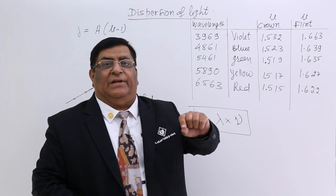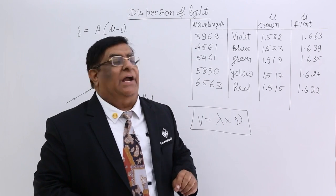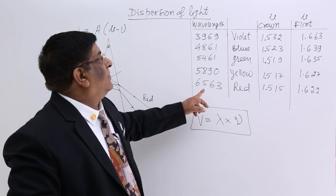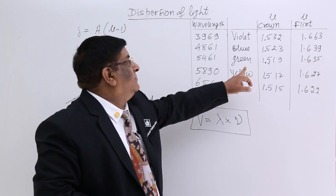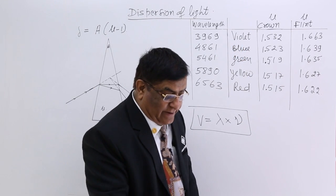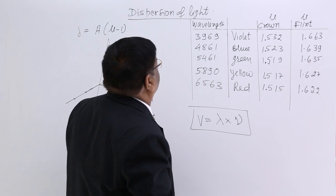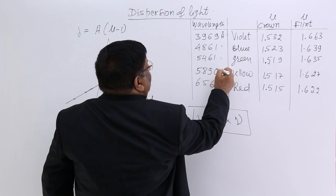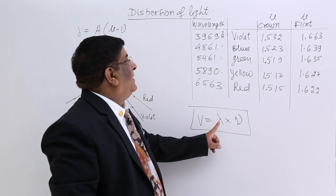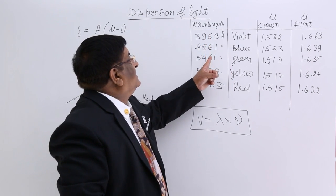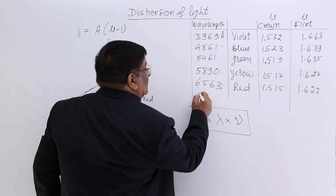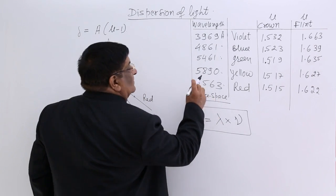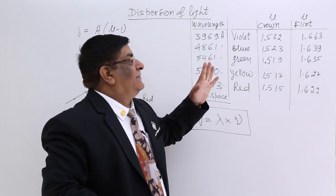We measured different wavelengths by different methods and found that the wavelengths in angstroms correspond to violet, blue, green, yellow, and red. This is the wavelength of light in free space, and it corresponds to each color.